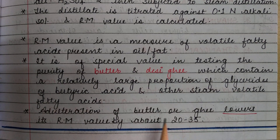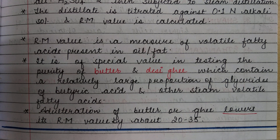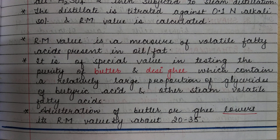Adulteration of butter or ghee lowers the Rm value by 20 to 35. That means more the adulteration, lower the Rm value and vice versa. When there is adulteration in butter or ghee, it lowers the Rm value by about 20 to 35.